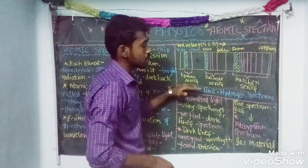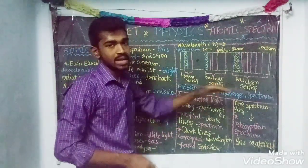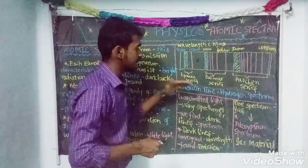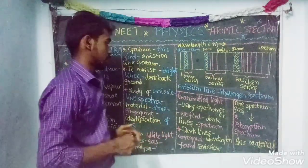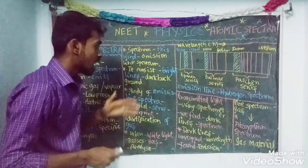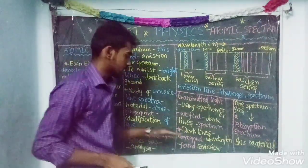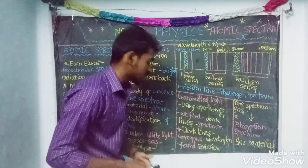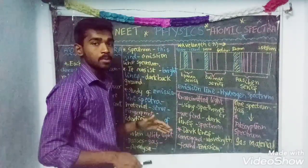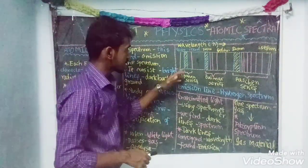This is the emission spectrum — the hydrogen spectrum. The dark lines correspond to specific wavelengths. If the dark lines are in the spectrum, they correspond to the field of wavelength.